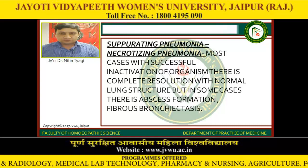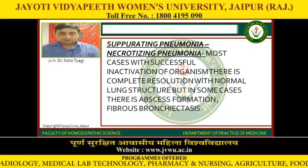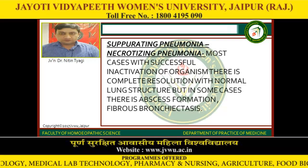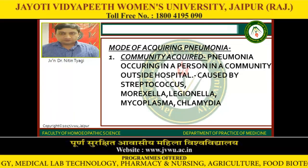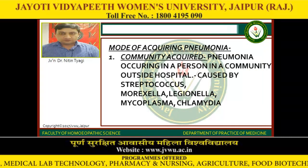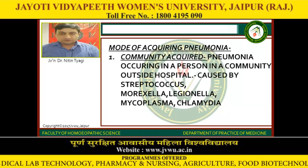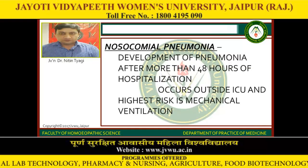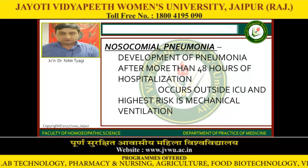Suppurating pneumonia, also known as necrotizing pneumonia: in most cases with successful inactivation of the organism there is complete resolution with normal lung structure, but in some cases there is abscess formation or fibrous bronchiectasis. According to the mode of acquiring pneumonia, it is divided into community-acquired pneumonia — occurring in a person in the community outside hospital, caused by Streptococcus, Moraxella, Legionella, Mycoplasma, and Chlamydia — and nosocomial pneumonia, defined as development of pneumonia after more than 48 hours of hospitalization, occurring outside the ICU with highest risk in mechanical ventilation.